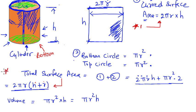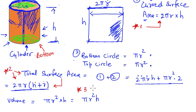So these are your three key findings: number one, the curved surface area equals 2πrh; number two, the total surface area equals 2πr(h + r); and number three, the volume of a cylinder equals πr²h. Let's now practice one problem.